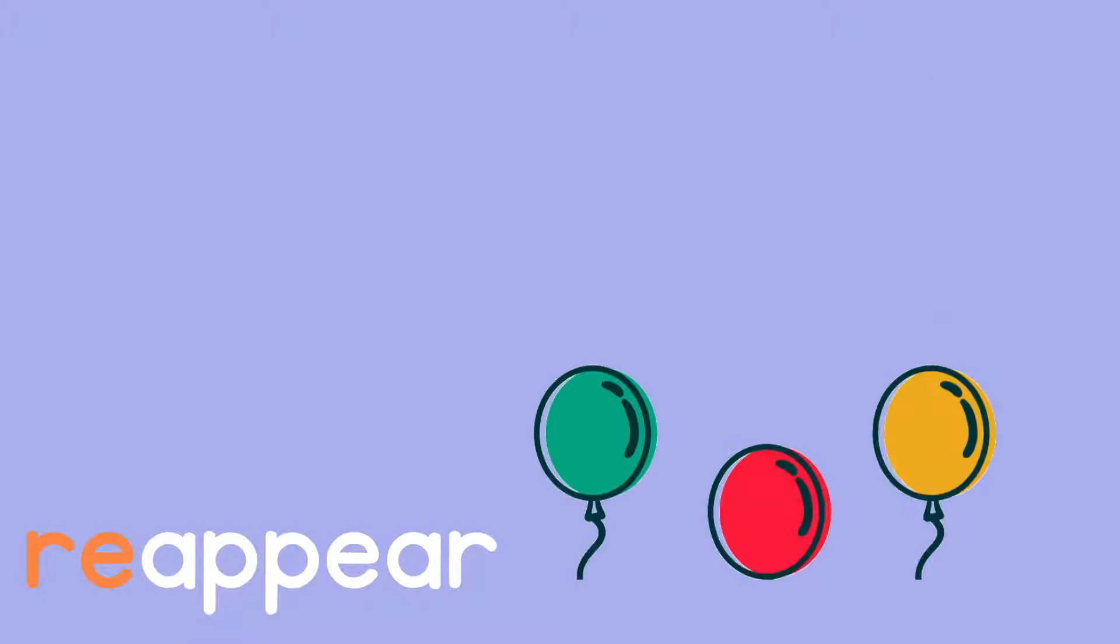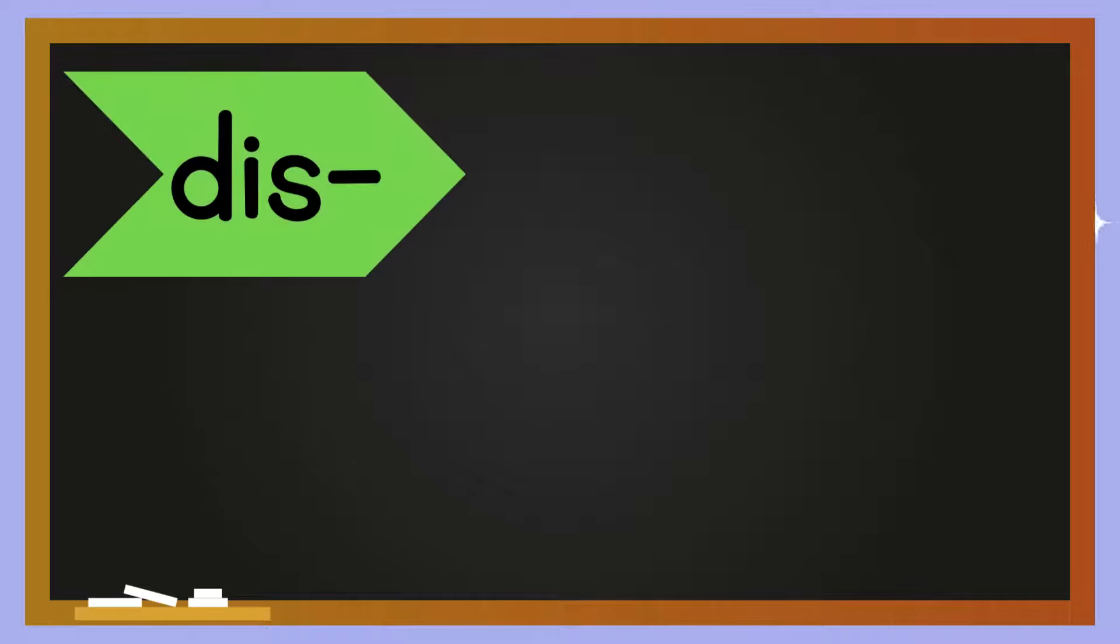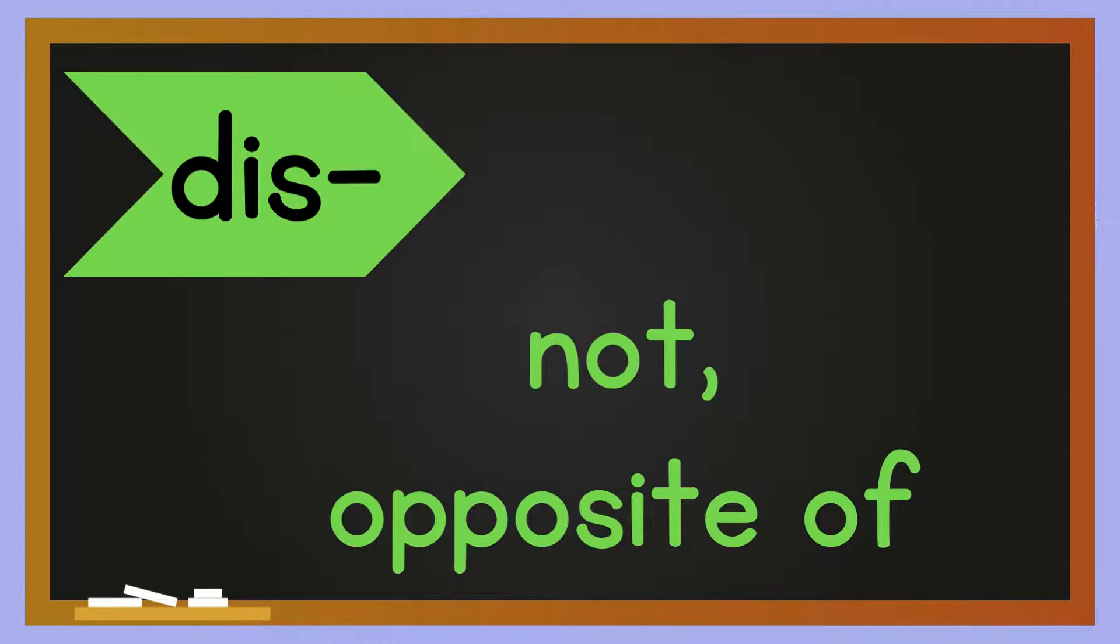Dis: when dis is added to a word, it means not or opposite of. Disappear means not appear. Dishonest. Disagree.